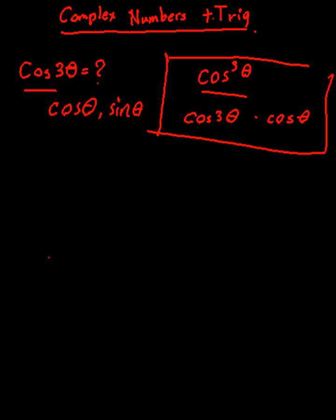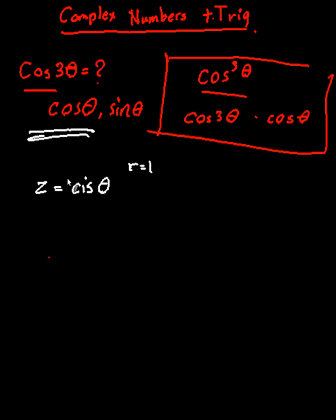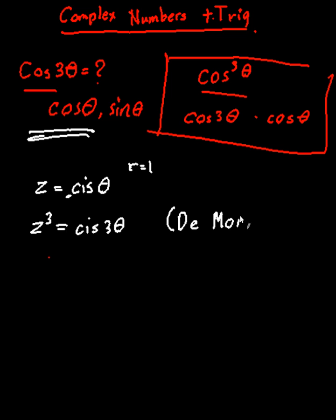Let's focus on the first part of the question. I'll start by saying z is equal to cis θ, where r is equal to 1. Now, by De Moivre's theorem, z cubed is equal to cis 3θ.